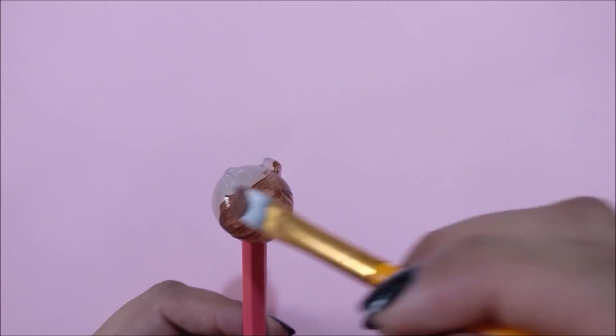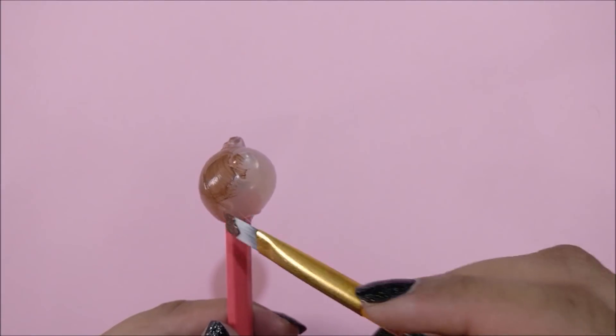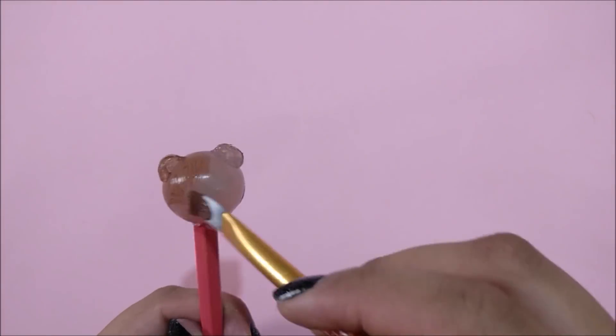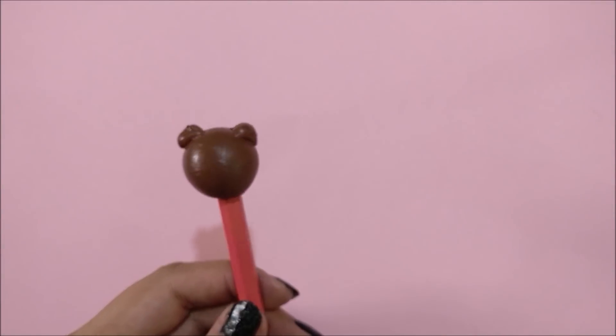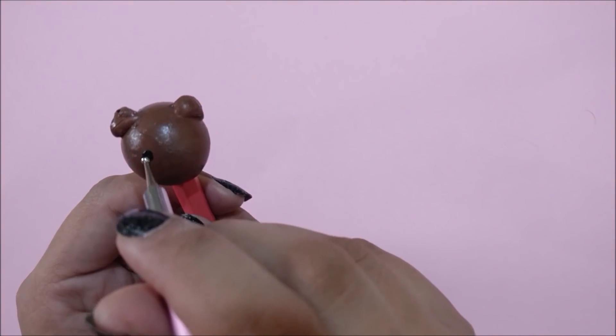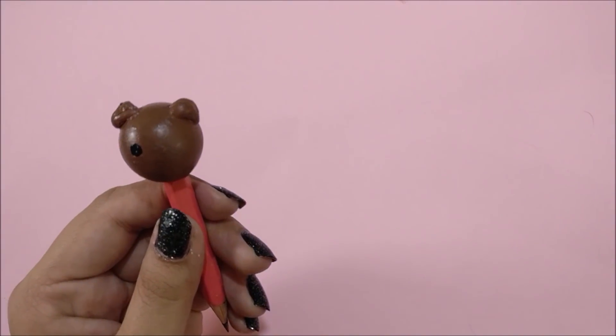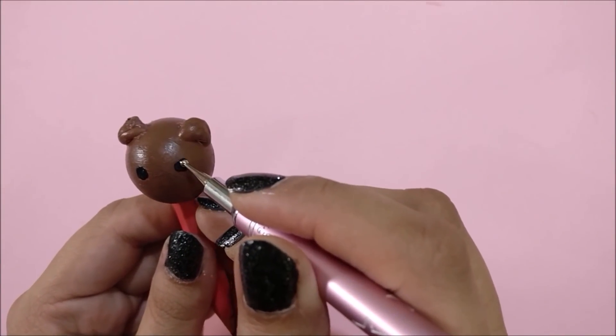Next I am applying brown acrylic paint to the bear face. I have applied two layers in total to achieve a patch-free look. Then keep this pencil aside to dry. After drying, I am drawing eyes, nose, ears, blush, and all that cute stuff which I drew earlier on the notebook.